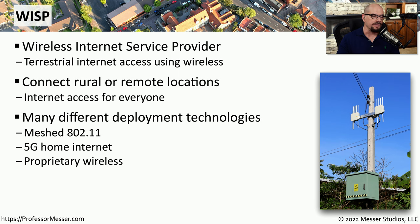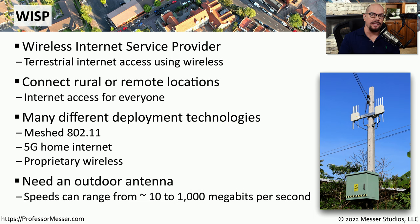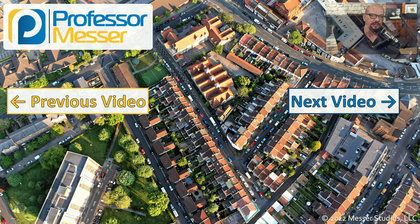Some of these wireless ISPs will use meshed 802.11 to connect devices. They might have a 5G connection for your home internet, or they may be using some other type of proprietary wireless connection. In many cases, you'll need an external or outdoor antenna to be able to send and receive information from this WISP. Usually, you get very good performance from these wireless networks, and in some areas these networks can operate up to 1000 megabits per second.